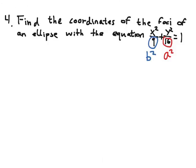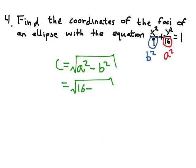To find the foci, we have to use the value of C, which is the square root of A squared minus B squared. And here we know A squared is 16, B squared is 9. That gives us the square root of 7.